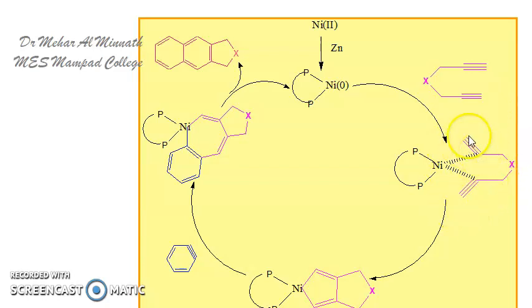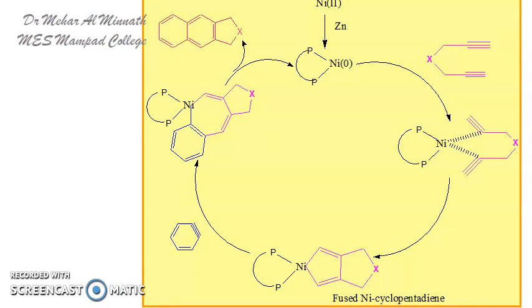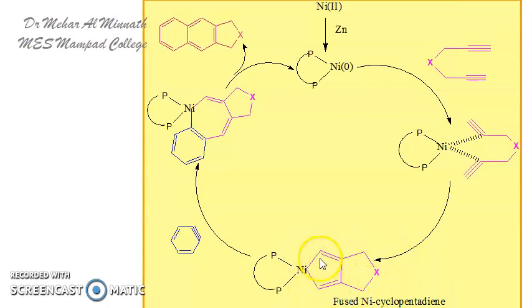You have two wings here — these are the two alkyne functional groups. Later on they undergo ring cyclization or fusion, and you get the fused nickelacyclopentadiene ring system.